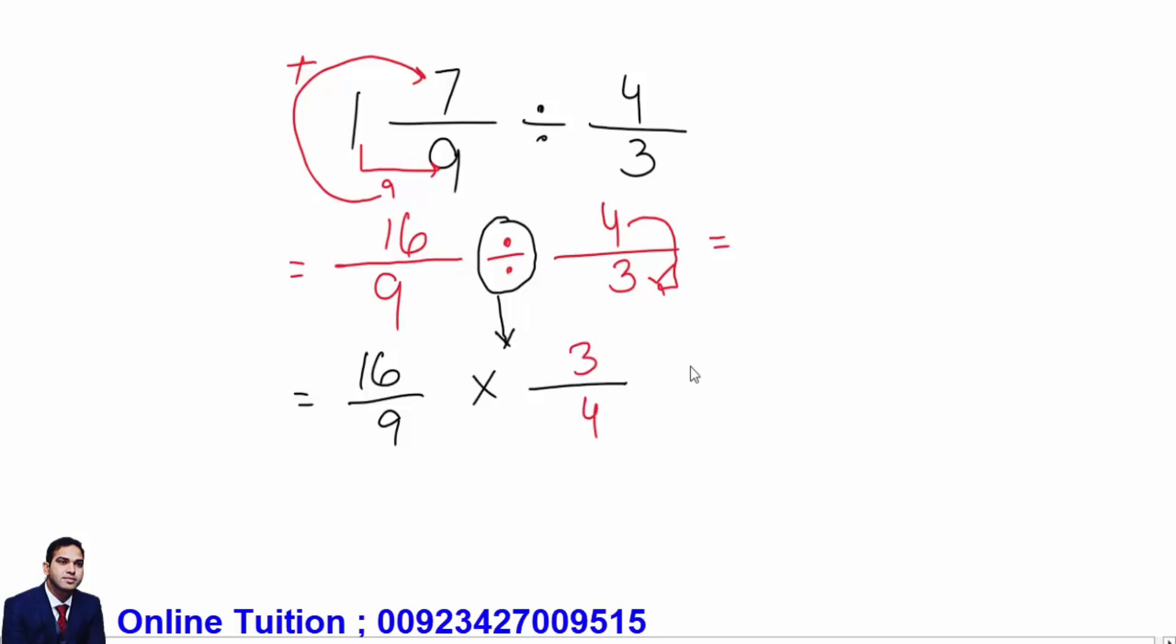These are two important steps. Now you can cut cross or you can cut numerator with denominators. But as you can see, nine is not divisible by sixteen and three is not divisible by four, so we will cut cross.